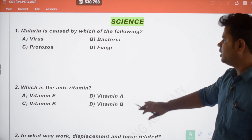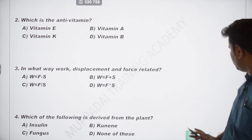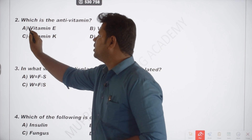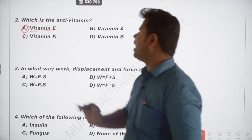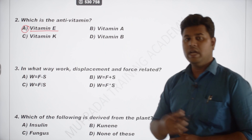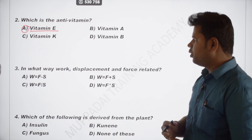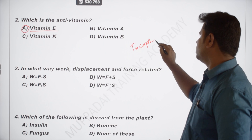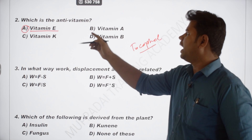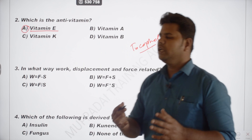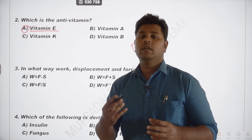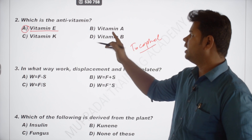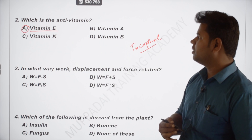The next question: which is the anti-vitamin? Vitamin E is a fat-soluble vitamin. The name of Vitamin E is tocopherol. Deficiency of Vitamin E causes nerve and muscle damage. So the anti-vitamin is called Vitamin E.